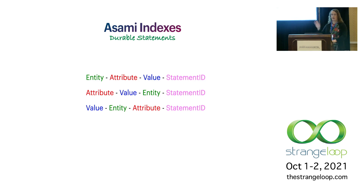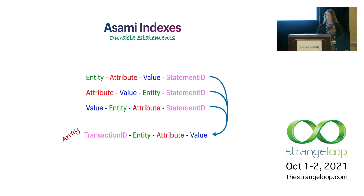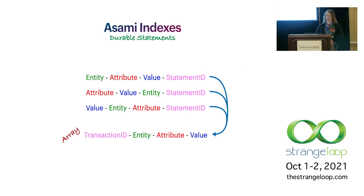The statements we're storing — those four numbers — are in the same ordering used for the maps, with a statement ID attached at the end. That ID serves double duty as an offset into an array of statements. In the array format, it includes a transaction ID. Having these IDs isn't necessary for most graph operations, but it gives us the opportunity to make queries about statements which appear in a transaction, or to make statements about other statements by referencing a statement by its ID.